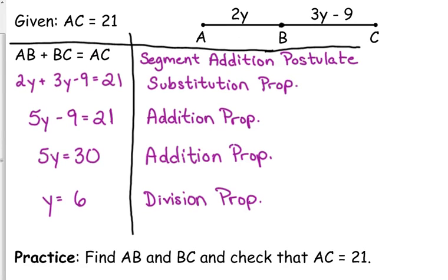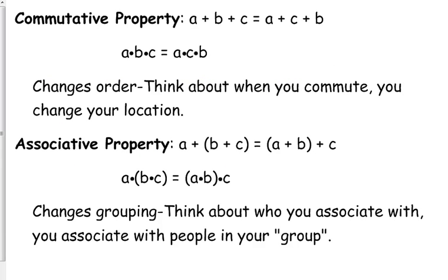Now that we know what Y equals, find the actual measures of AB and BC and confirm. The commutative property says it doesn't matter what order you do things in. When you commute somewhere, you're changing your location — the commutative property changes the order in which you add or multiply things, and it is equivalent. It doesn't matter whether you multiply A times B times C, or A times C times B, or C times A times B — you get the same result.